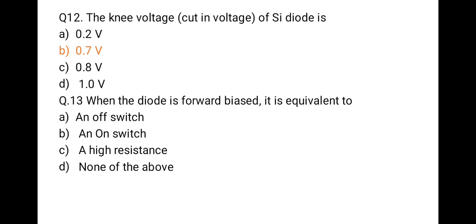The next question is: when the diode is forward biased, it is equivalent to — option one: an off switch; option two: an on switch; option three: high resistance; option four: none of the above. The correct option is an on switch. When a diode is forward biased, the switch is on; when reverse biased, the switch is off.